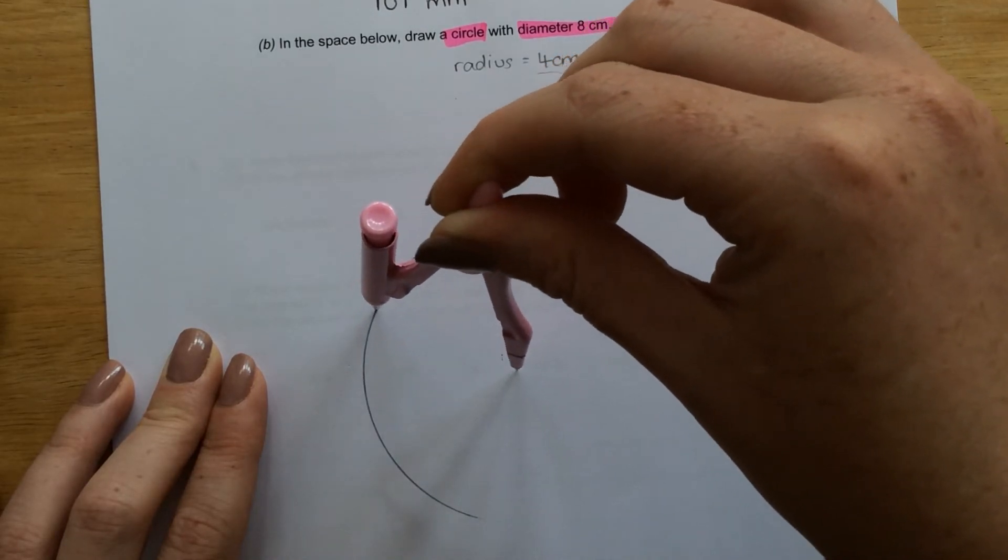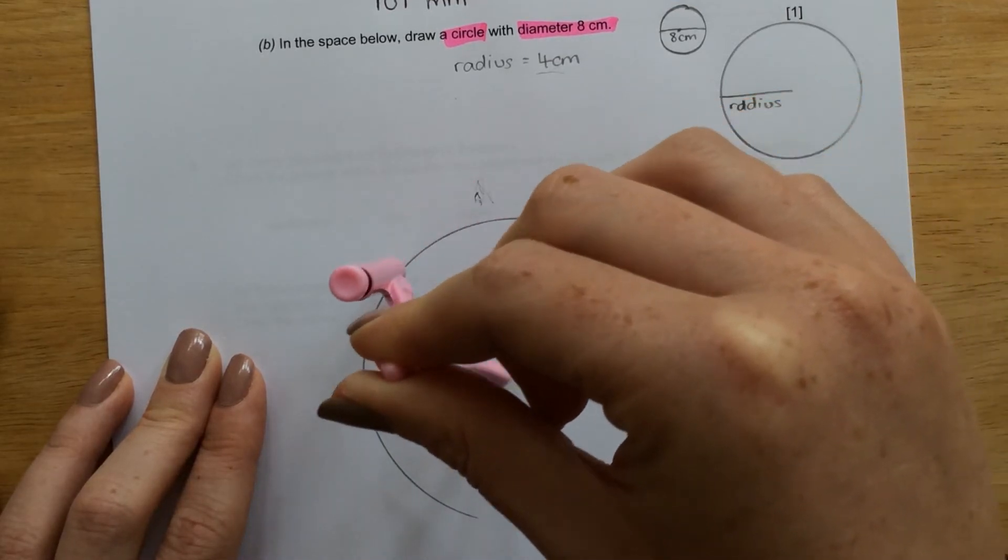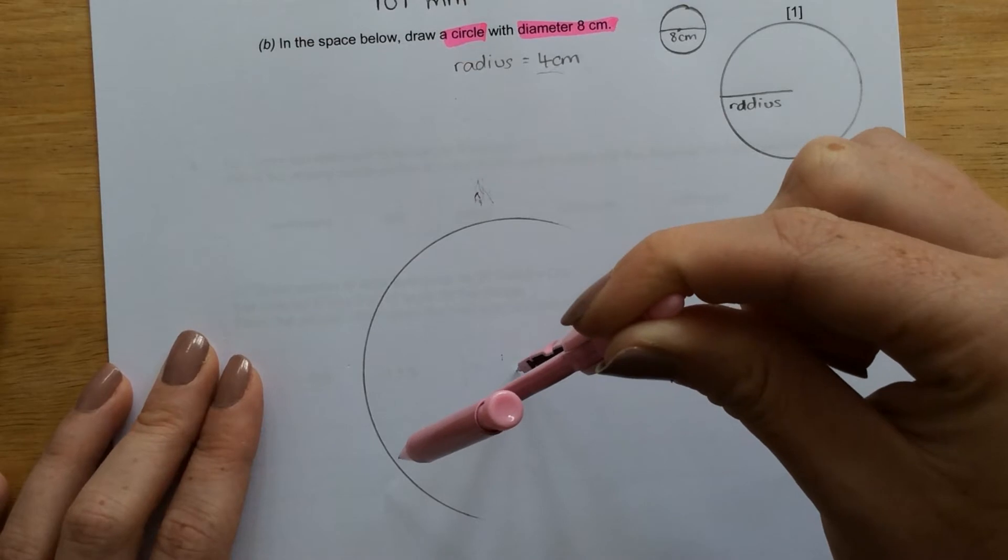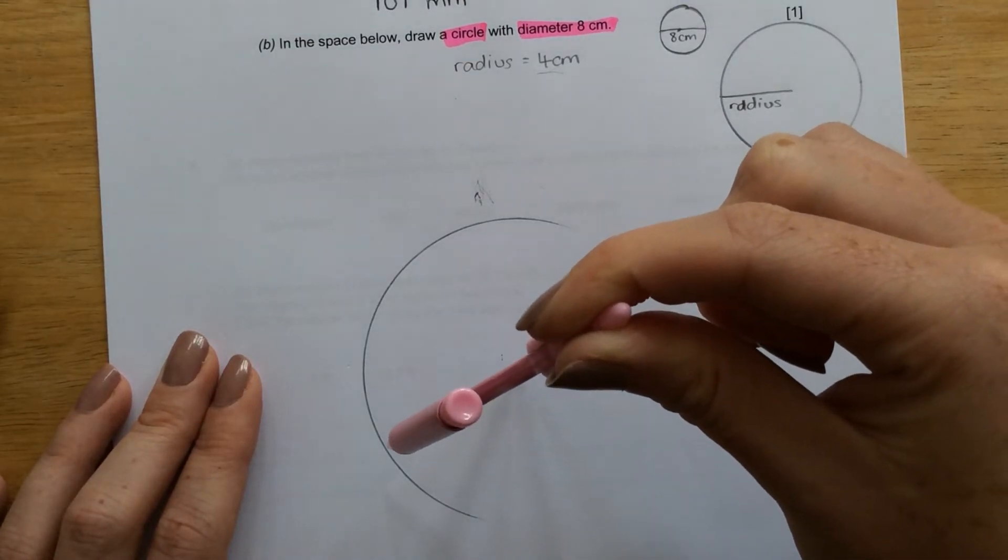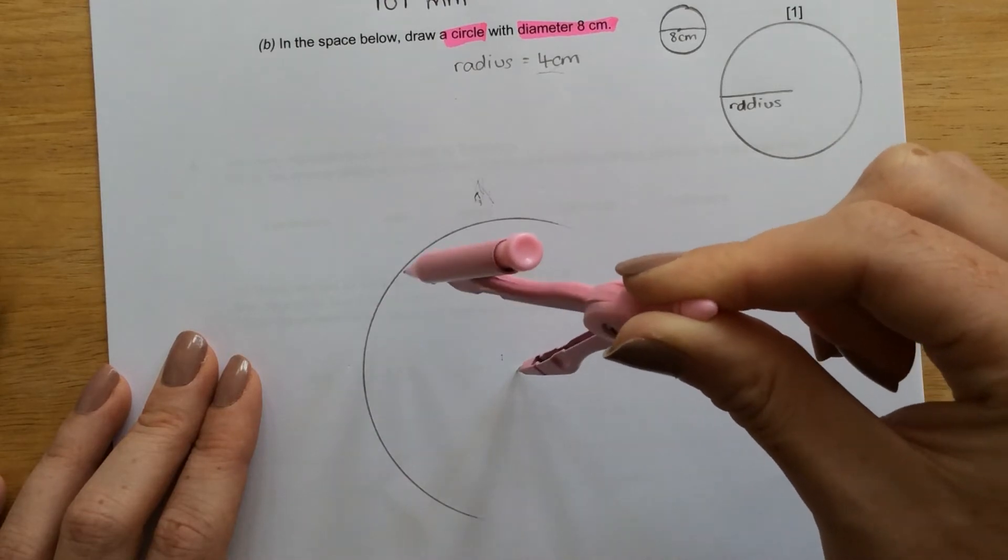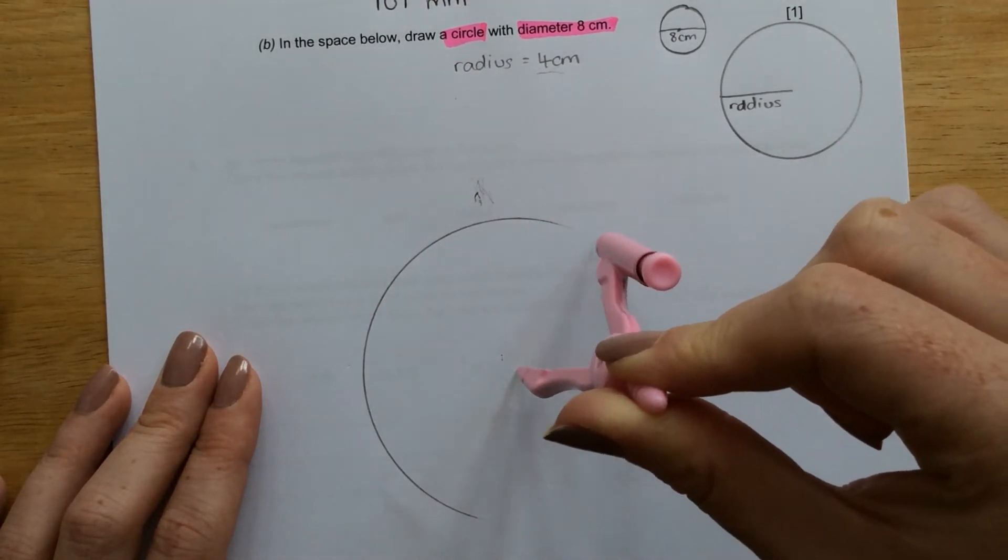So now you'll see, if I go over that line again, it's in exactly the same position. So if you do move your compass at any point, don't panic and start doing it all over again. Just find the point where the compass was. If you're putting enough pressure on it, it will leave a nice indent.